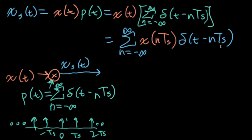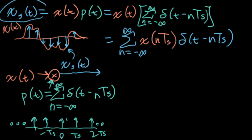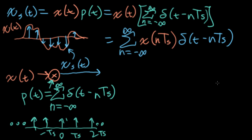Let's think about what this looks like. Suppose our original signal x of t is just some arbitrary function. We're multiplying it by this impulse train, so what we wind up with for our sampled signal is a bunch of delta functions with weights equal to what our original function x of t was. Now, this xs of t is not the same as x of n — it's not the same. It's conceptually containing the same information, but x of n should really be thought of as a sequence of numbers in an array inside a computer.